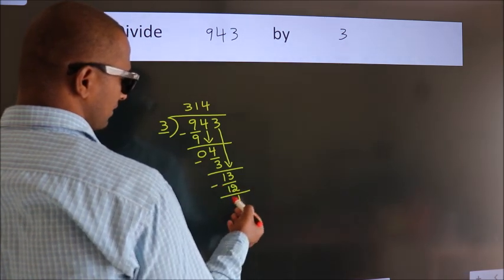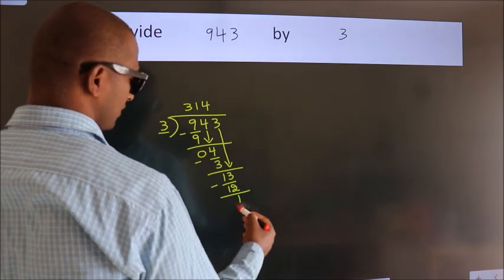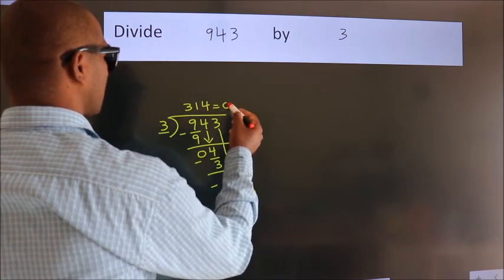After this, there are no more numbers to bring down, so we stop here. This is our remainder. This is our quotient.